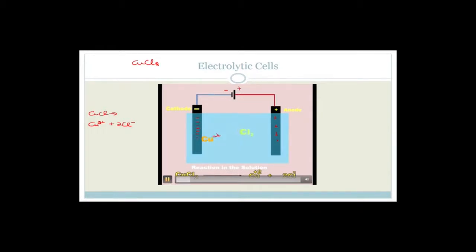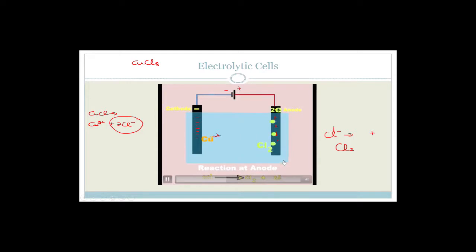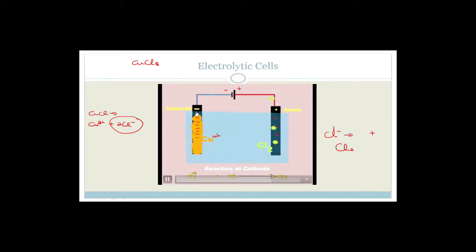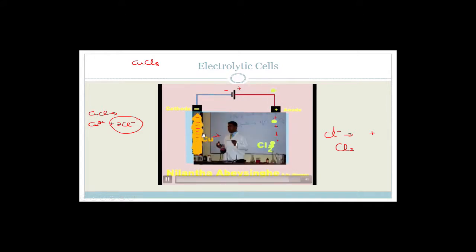The chloride ions, the 2Cl⁻ ions, are being attracted to the positive electrode. By doing that they become chlorine and give off their electrons. So let's see - it becomes chlorine and gives off two electrons. The electrons flow through the circuit. At the same time, the Cu²⁺ is attracted to the negative cathode. Notice that the cathode is negative, so Cu²⁺ is going to form copper.